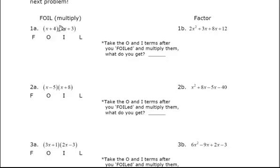FOIL meaning F, the first, so x times 2x is 2x squared. The outside, so x and 3, is plus 3x. The inside, 4 times 2x.